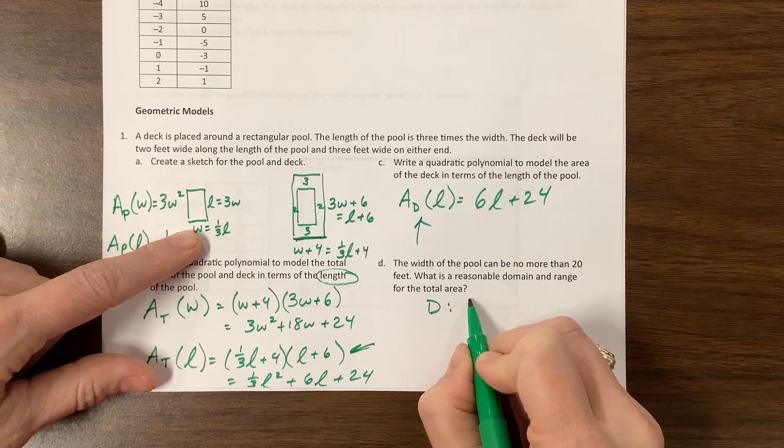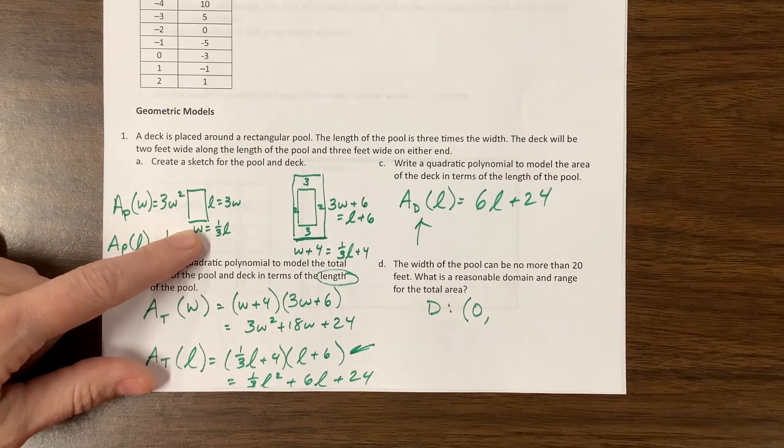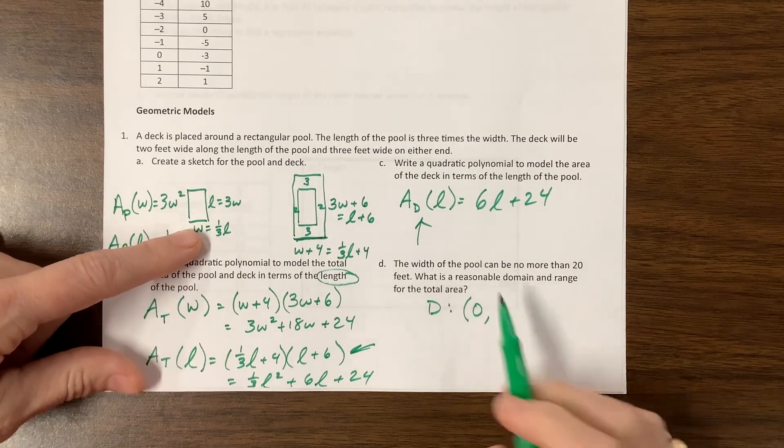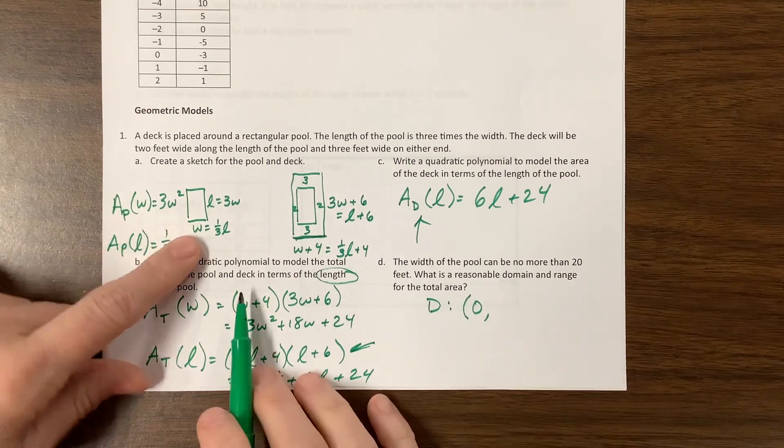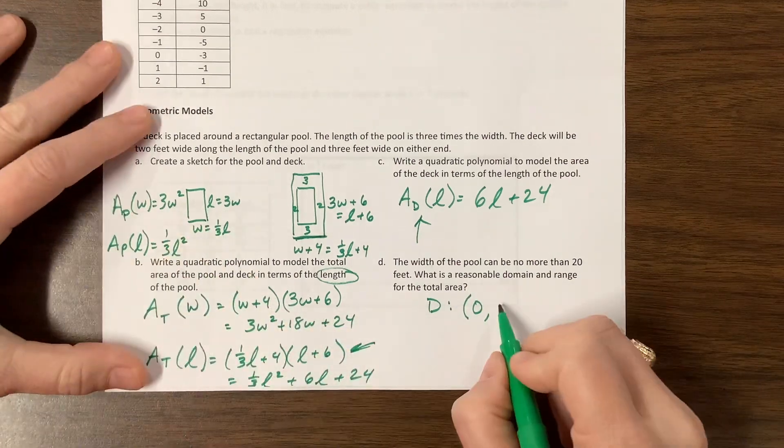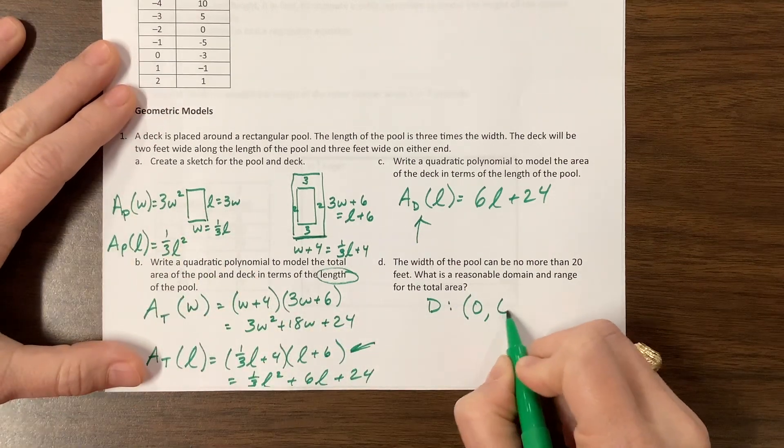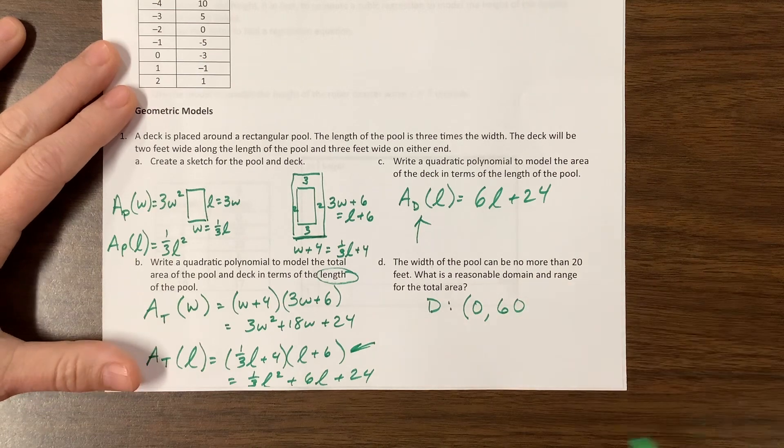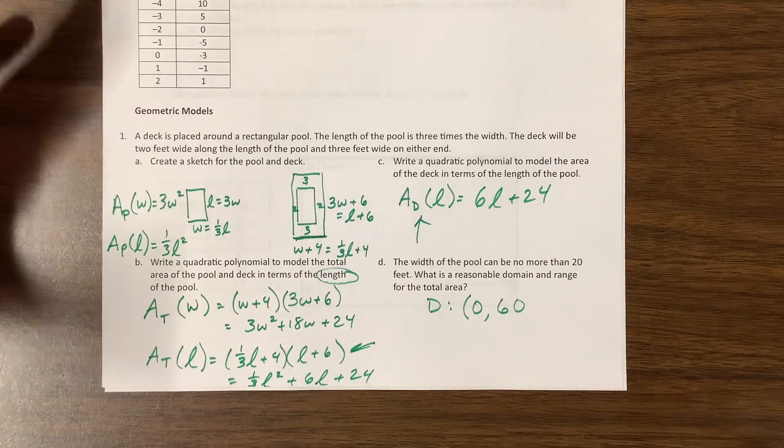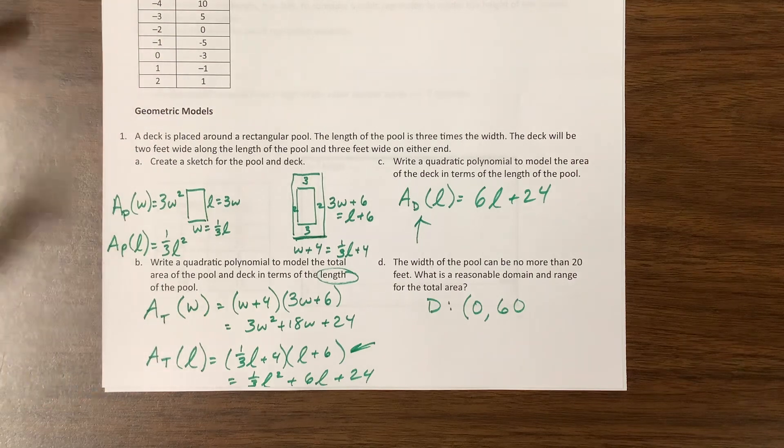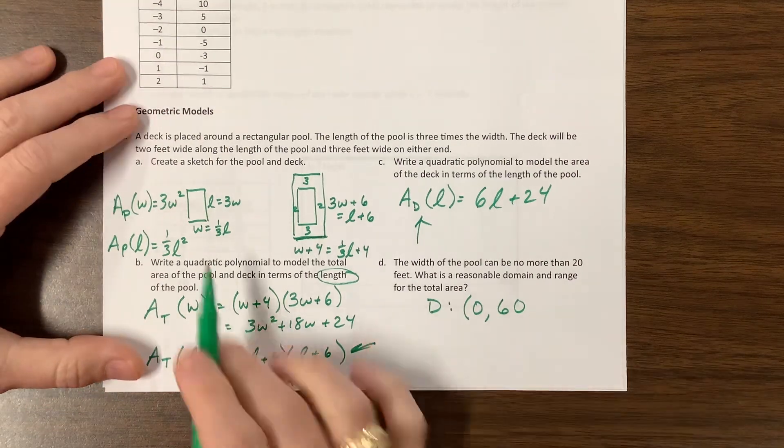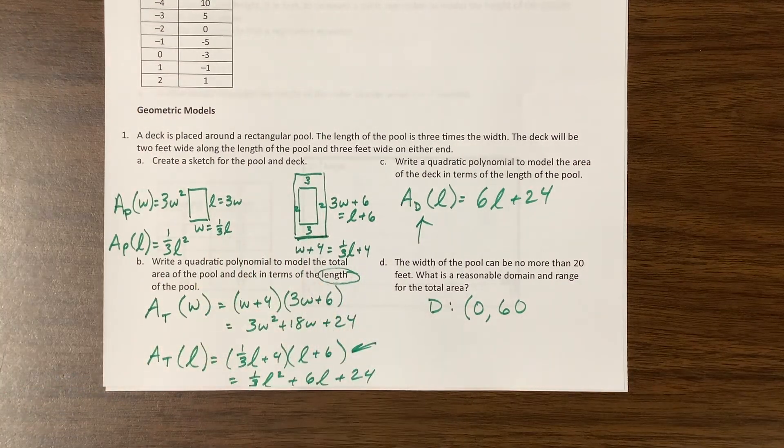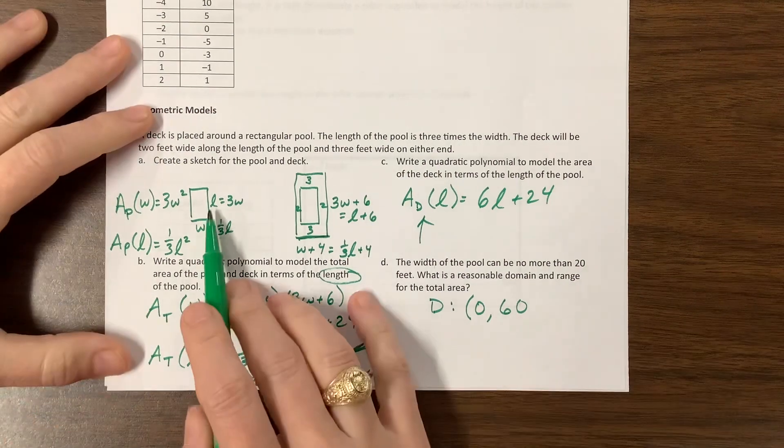If the w is, let's use this previous, they kept us using this in terms of l. So I would say we can't be equal to zero, because then you don't have a pool at all. And then if the width is 20, then that means the length is going to be 60. So I would say that a reasonable domain would be from zero to 60-ish for the l values.